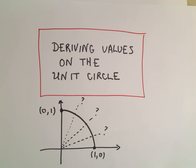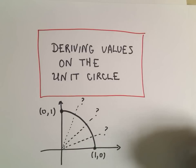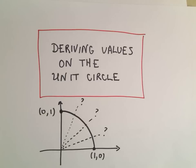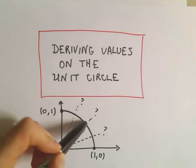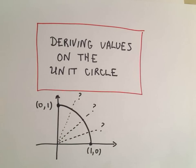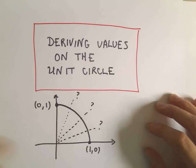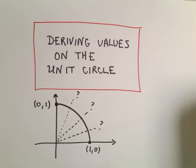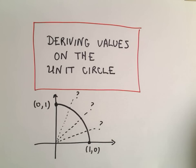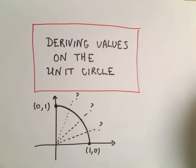In this video I want to look at deriving the values on the unit circle. I know I've got a video out there that is pretty popular, and what I do is I kind of show a trick to remember the values. A trick is useful if you're in a test or just need to remember things quickly, but it's always better to be able to derive them. I want to show you how to derive. I'm going to just do the first quadrant — after that it's just reflecting and changing signs.